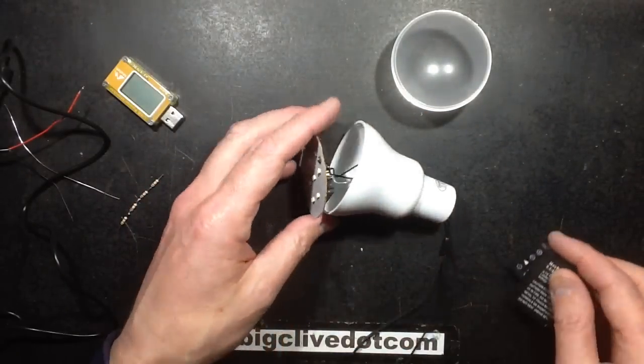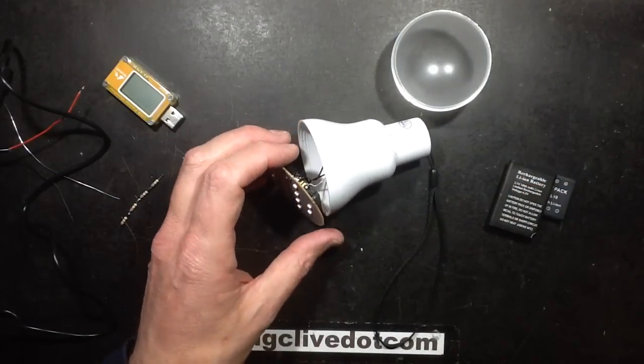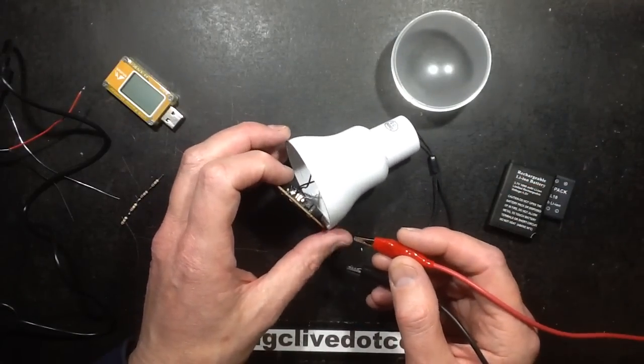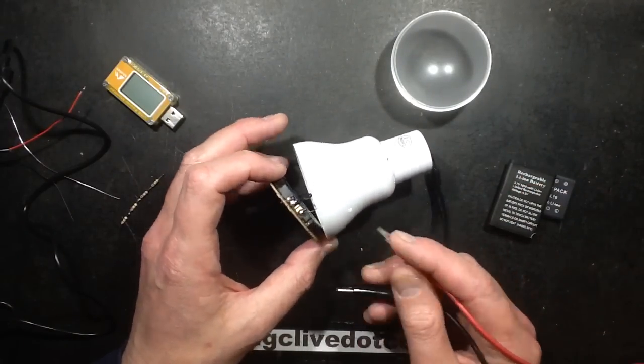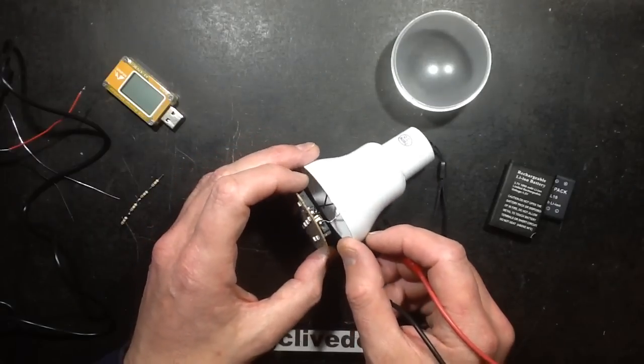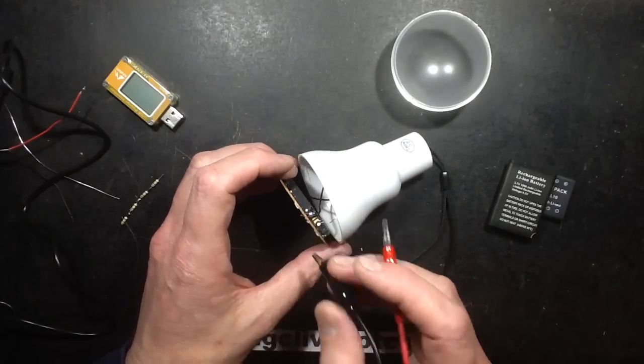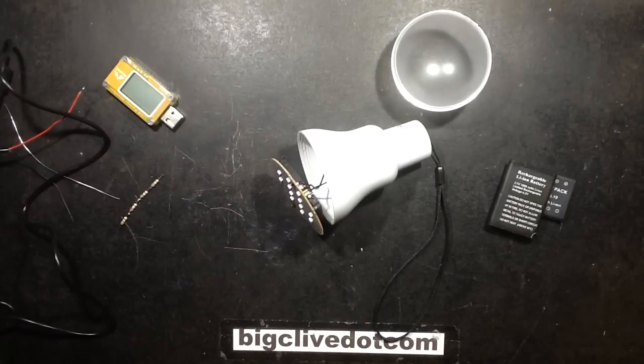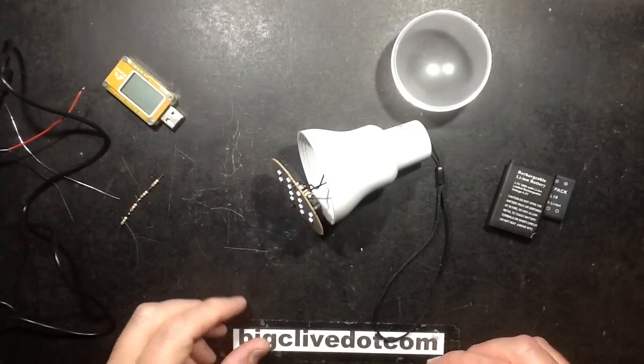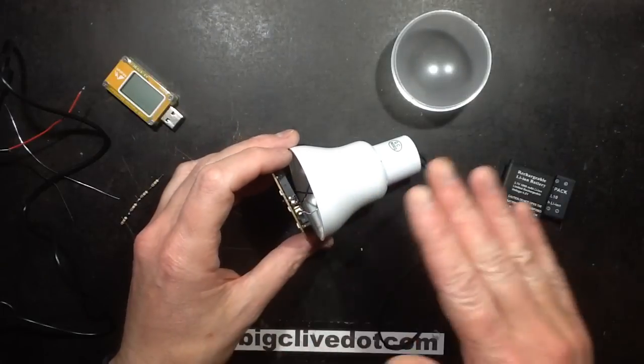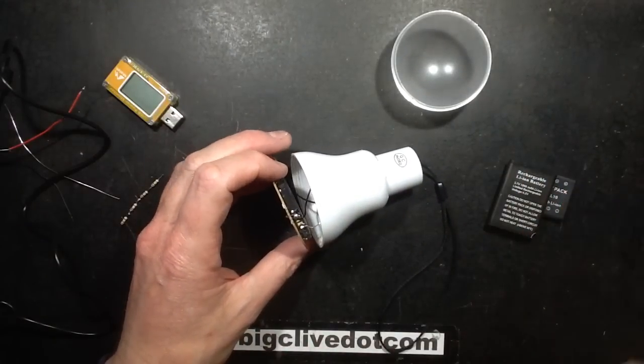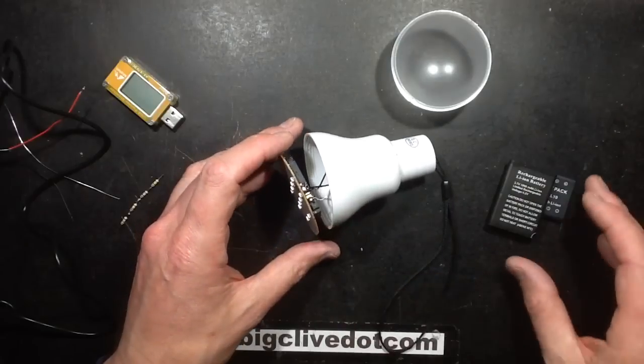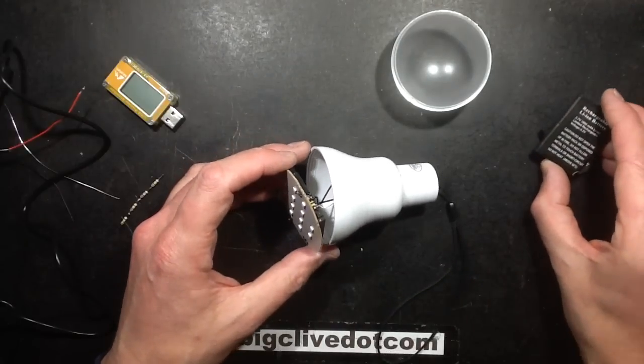I decided to put that to the test. I got my bench power supply, limited the current to about 300mA and set the voltage for about 4.3V. I hooked it onto the terminals and monitored the voltage rising until it did actually cut off at 4.2V, so it does have protection. The current just dropped instantly and the voltage shot up because it had disconnected from the battery.